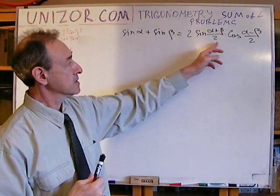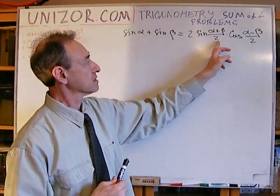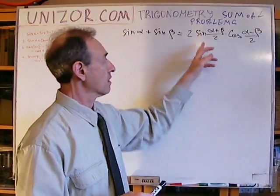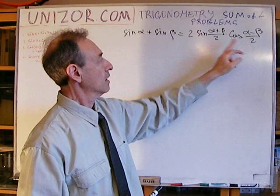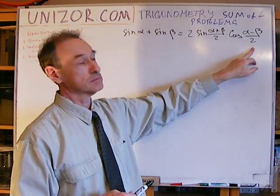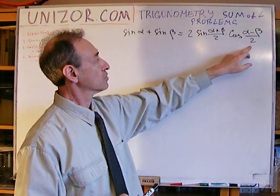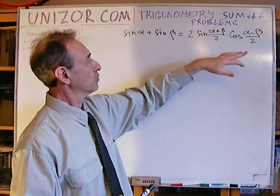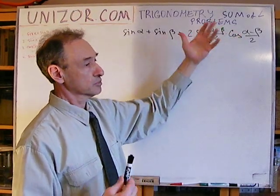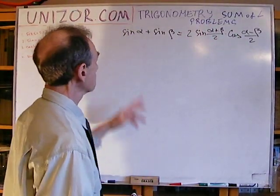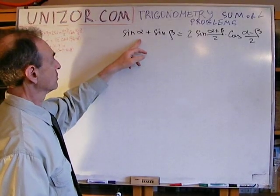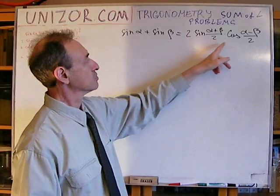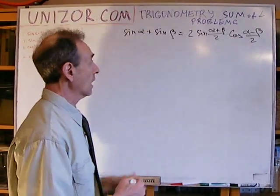Whenever I see these type of things, it immediately comes to my mind that their sum is equal to alpha and their difference is equal to beta. If you add them together, b and minus b would be zero, so alpha and alpha would be two alpha, divided by two, so it's alpha. I think it makes sense to convert this alpha into a sum of these and this beta into a difference between these. Let's see what happens.